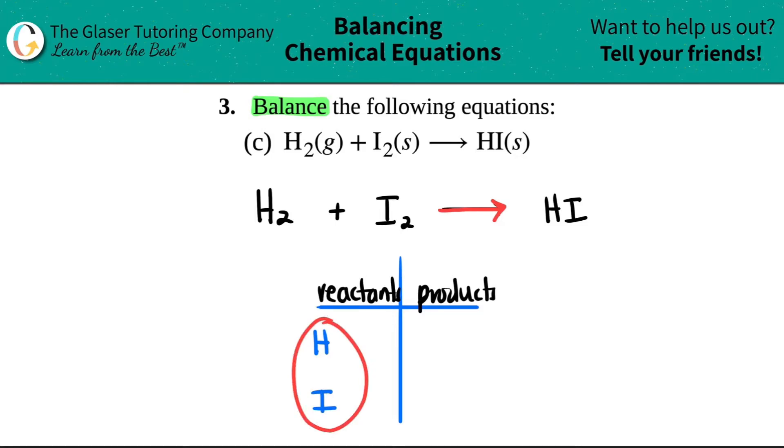All you're going to do is replicate this onto the product side. So H comes first, and then I. Now we're just going to say how many we have of each on the reactant side.